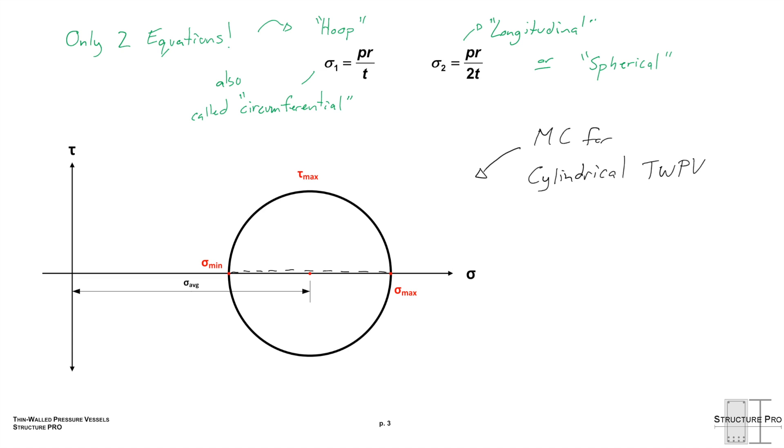Let's draw here the Mohr's circle for cylindrical thin-walled pressure vessels. We know that sigma min is half of sigma max, pr over 2t, and we're actually easily able to find sigma average, which is 0.75 pr over t, and the maximum shear stress, 0.25 pr over t. So I would recommend doing some examples as usual.